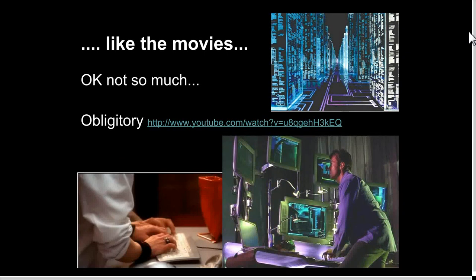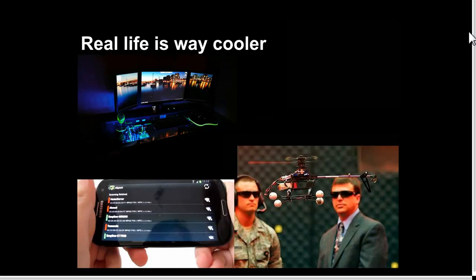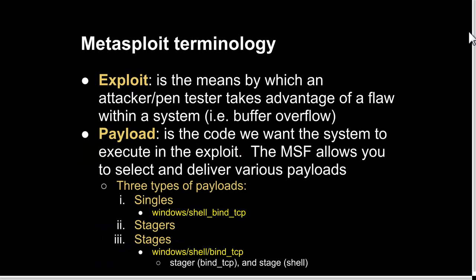Some people say Metasploit lets you hack like the movies, but real life is way cooler. There's a YouTube clip from NCIS where two people work on the same keyboard to beat a hacker, which is obviously ridiculous. You can do this stuff on your mobile phone now — that's what dSploit does. Next week or the week after, a graduate researcher Mike Mitchell will come in with his quadcopter and we'll attack a Wi-Fi network and man-in-the-middle anyone who connects to it.